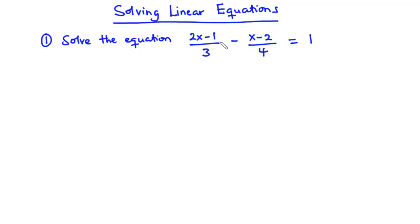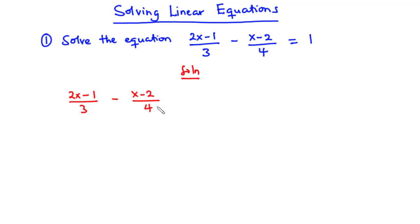Solve the equation: (2x minus 1) over 3 minus (x minus 2) over 4 equals 1. Let's solve this together. Now let's rewrite the question: (2x minus 1) over 3 minus (x minus 2) over 4 equals 1. To solve this problem, the first thing we are going to do is to do away with the fractions. We have two fractions: (2x minus 1) over 3 and (x minus 2) over 4.